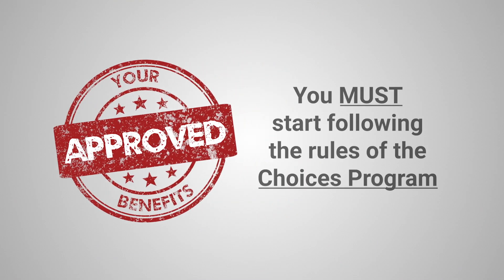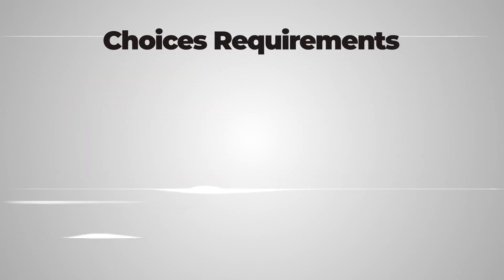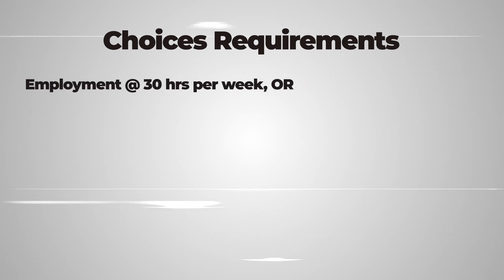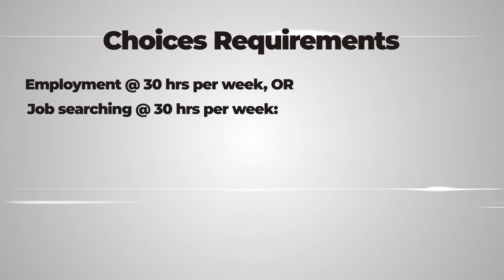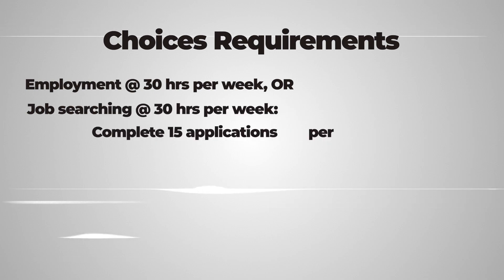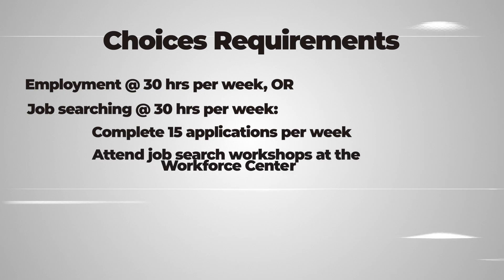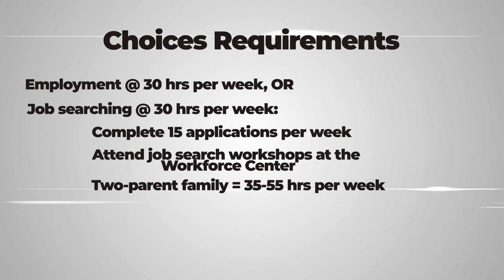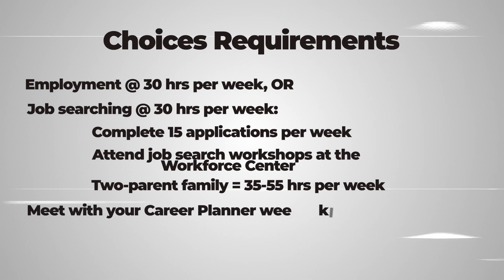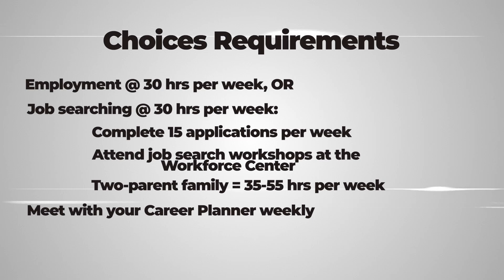If your benefits are approved, you must start following the rules of the Choices Program. You must participate in a work activity through employment at 30 hours per week or job searching at 30 hours per week. This includes completing 15 applications per week and attending job search workshops at the Workforce Center. If you are a two-parent family, this total increases to 35 to 55 hours per week. You must also meet with your career planner weekly. Failure to do any of these could result in a loss of your benefits.